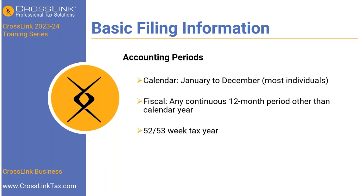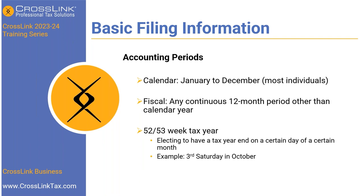Every once in a while — and you generally won't see this with a small business — there's also the 52-53 week tax year. That's when a particular entity elects to have its tax year end on a certain day of a certain month, such as the third Saturday in October. Every few years that situation becomes a 53-week tax year. It's important to understand calendar, fiscal, and occasionally the 52-53 week tax year.